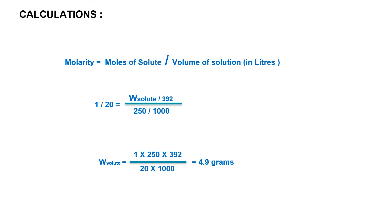Similarly, if I have to make 1 by 20 molarity but only 100 ml, instead of 250 I will take 100 in the calculation. These are simple calculations relating the weight of solute with molarity. In this particular titration, we are making 1 by 20 molarity and 250 ml of the solution, so I need 4.9 grams.